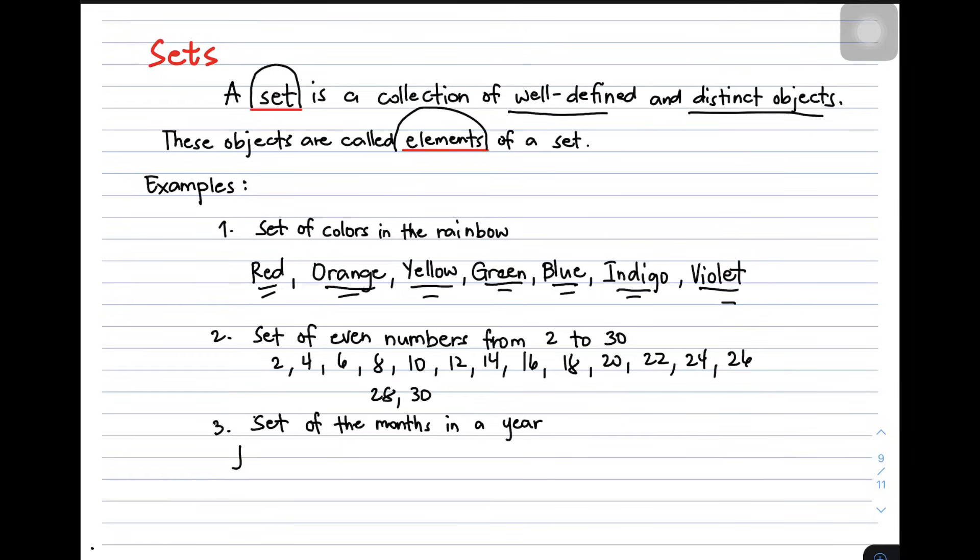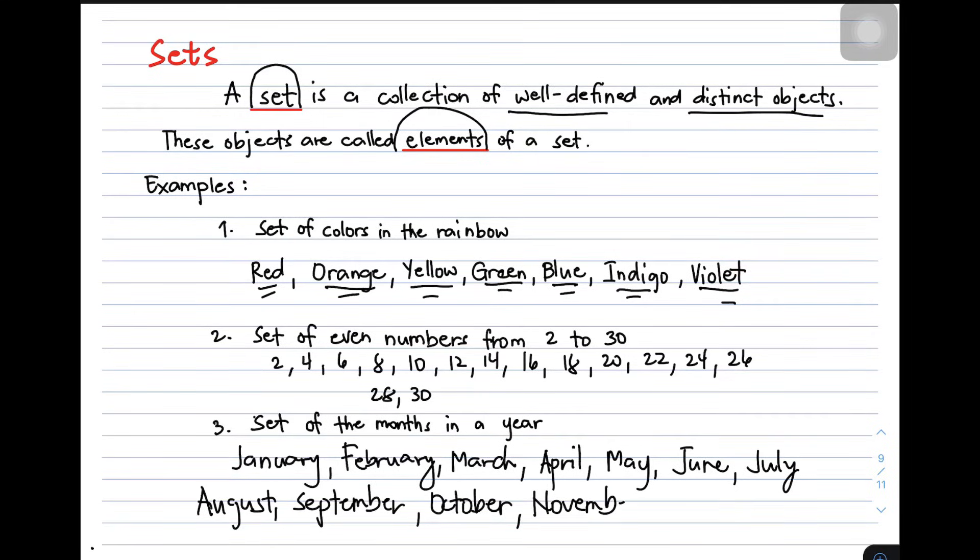So what are the months in a year? So we have January, February, we have March, next one is April, we have May, June, July, August, September, October, November, and lastly, December.